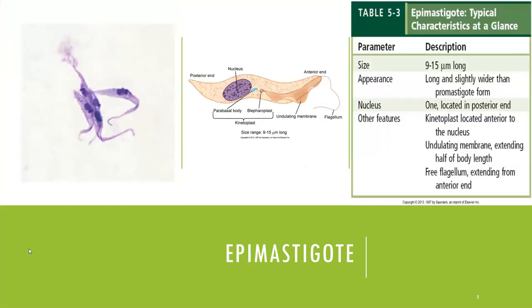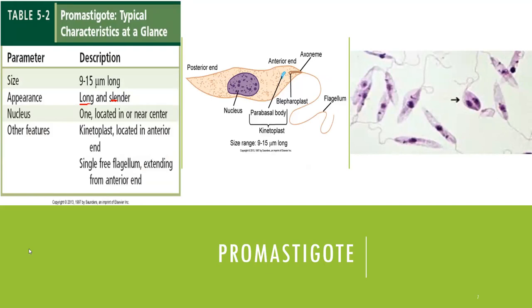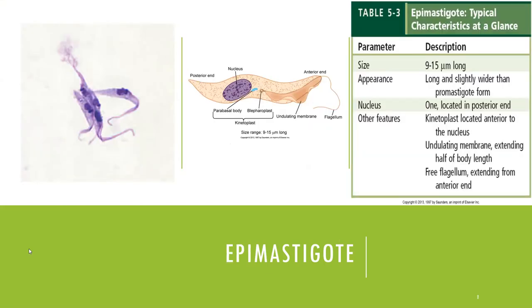The epimastigote is the third morphological form, approximately 9 to 5 micrometers long and slightly wider than the promastigote. The nucleus is located posteriorly, and there is only one nucleus. There is the presence of a kinetoplast and an undulating membrane that extends half the length of the body. One major difference between epimastigote and promastigote is the presence and extent of their undulating membrane.